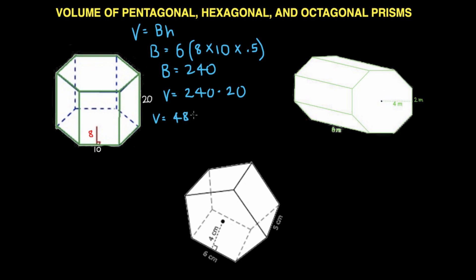Let's move on to our octagonal prism. Volume is going to be big B times height, and it's the same thing except we just changed how many triangles there are — there are 8 — and we just changed the dimensions.